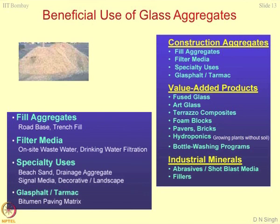In filter media, glass can be used quite easily. Some specialty uses exist in pharmaceutical companies. Another application is glasphalt — a mixture of glass and asphalt. Asphalt is a petroleum product and is quite scarce, so rather than using asphalt alone, people can go for a mixture of glass and asphalt — this becomes glasphalt. It is similar to what we discussed with shredded tires and their application in asphalt and tarmac. Many value-added products can be made.